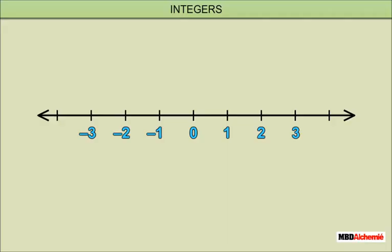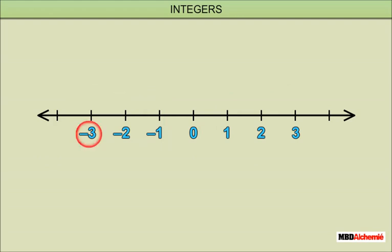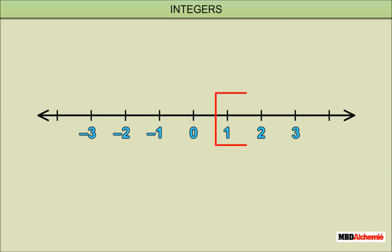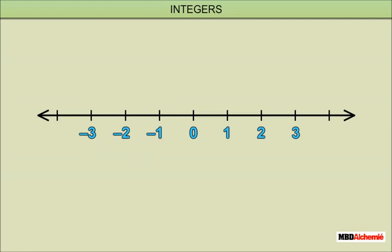Integers: a collection of numbers which consists of positive numbers (that is, natural numbers), zero, and negative numbers (that is, negative natural numbers) — ..., minus 3, minus 2, minus 1, 0, 1, 2, 3, ... — are called integers. The numbers 1, 2, 3, and so on are called positive integers. The numbers negative 1, negative 2, negative 3, and so on are called negative integers.